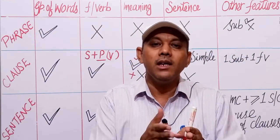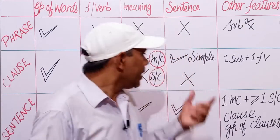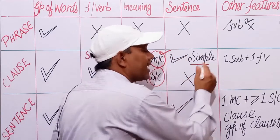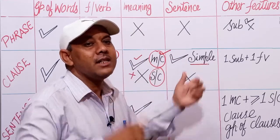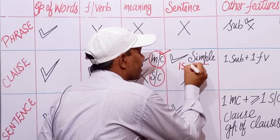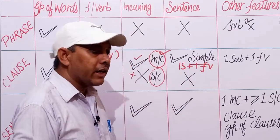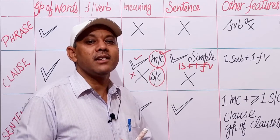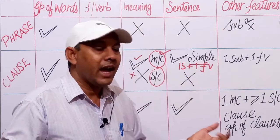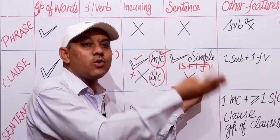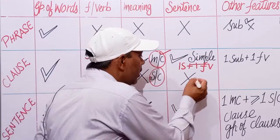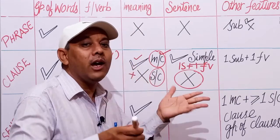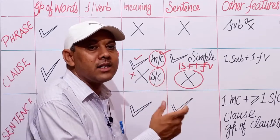Does every clause have a complete meaning? No — it depends upon the clause. A main clause has complete meaning and can make a complete sentence, but a subordinate clause cannot make a complete sentence on its own. So a clause may or may not have a complete sense. A clause may or may not be a sentence — if it is a main or independent clause, it is a sentence; if it is a subordinate or dependent clause, it is not a sentence alone.